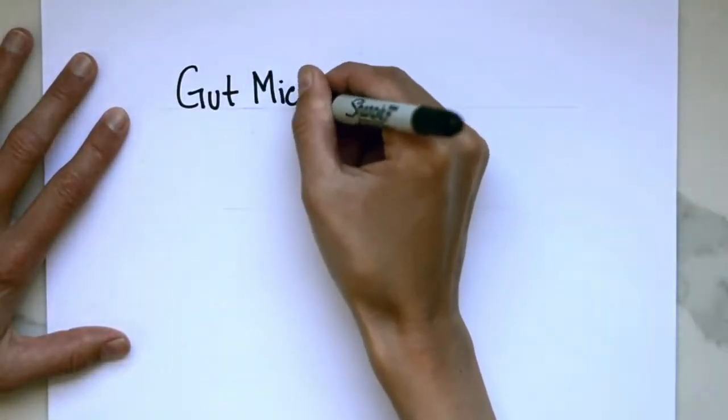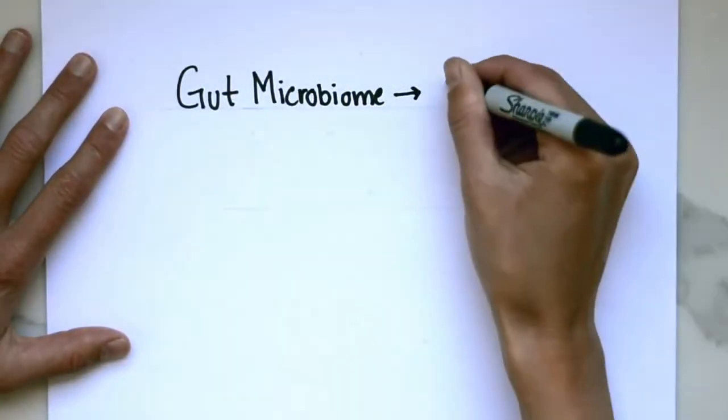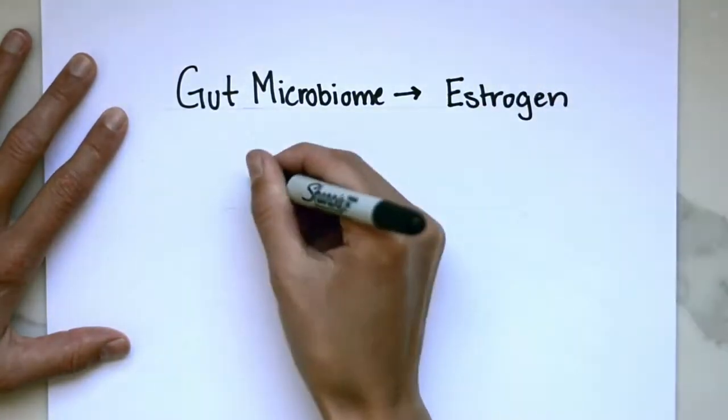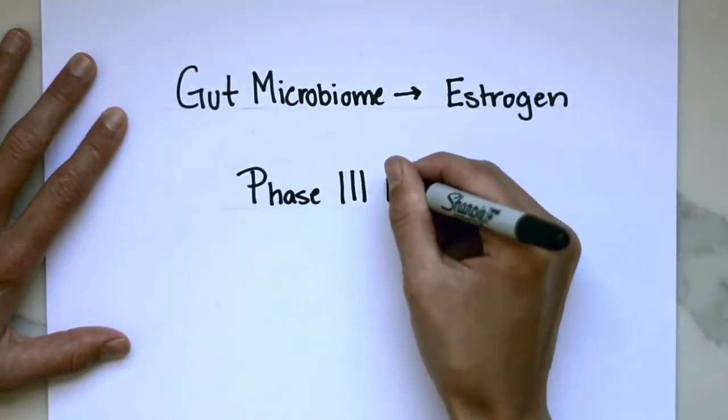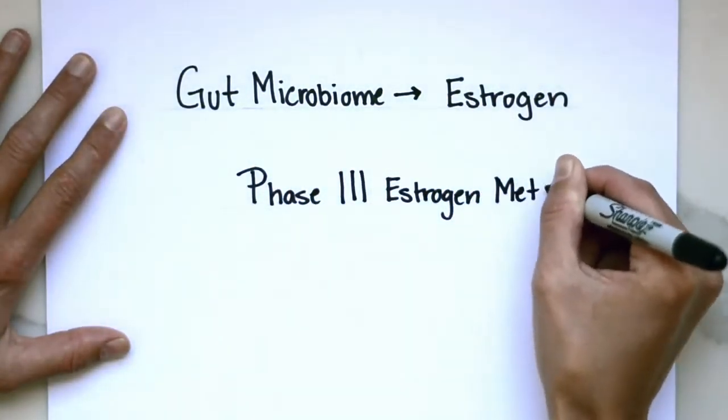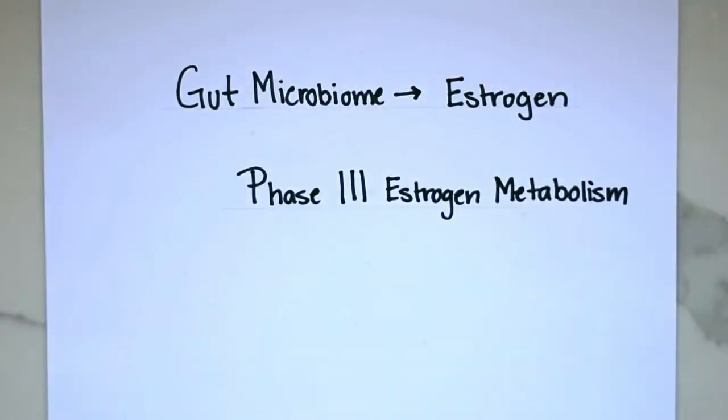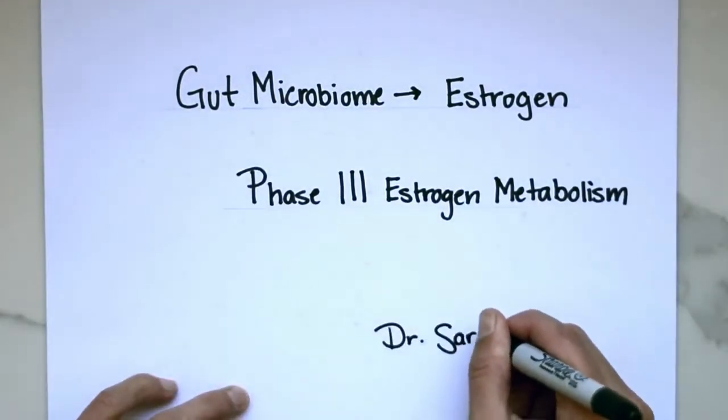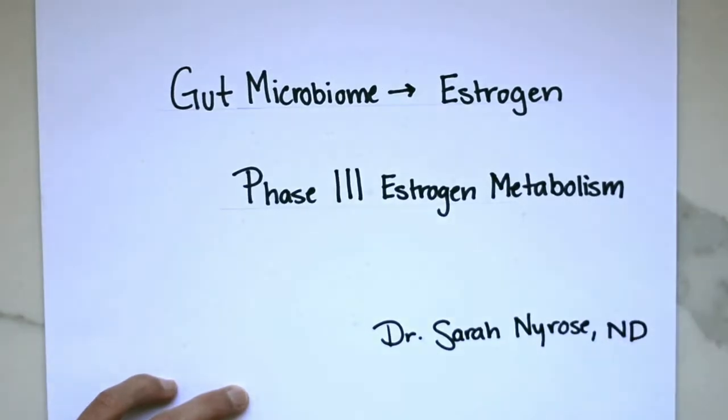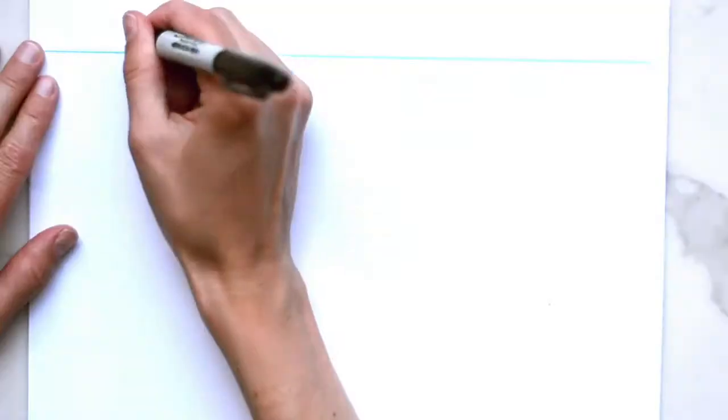Today, I'm going to discuss the importance of the gut microbiome on estrogen metabolism. In my previous video, I discussed estrogen metabolism in the liver through what's known as phase one and phase two of estrogen metabolism. The metabolism in the gut is known as phase three. So let's get started.